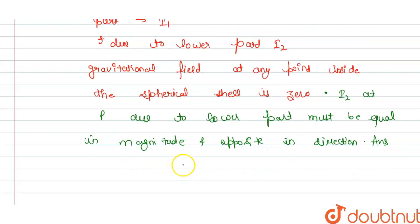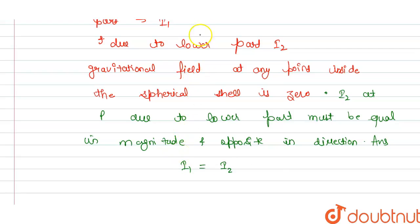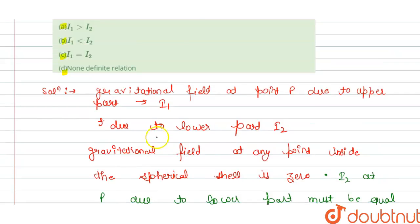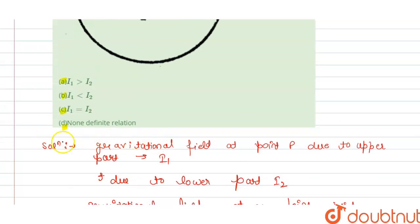So i1, the gravitational field at point P due to the upper part, must be equal to that of the lower part in magnitude but opposite in direction. This is the relation we get. Checking the options, option C is correct. Thank you.